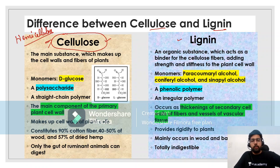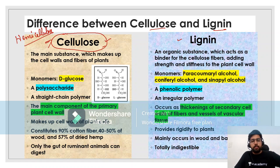First of all, cellulose is a component of the cell wall of plant cells. The main substance which makes up the cell walls and the fibers of the plants is cellulose.